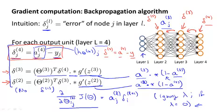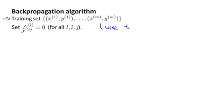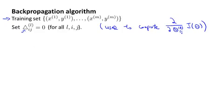So this is a lot of detail. Let's put it all together to talk about how to implement backpropagation to compute derivatives with respect to your parameters for the case of when we have a large training set, not just a training set of one example. Suppose we have a training set of m examples. The first thing we're going to do is set these capital delta L subscript ij — that triangle symbol is the capital Greek delta — equal to zero for all values of l, i, j. Eventually, this capital delta lij will be used to compute the partial derivative terms. These deltas are going to be used as accumulators that will slowly add things in order to compute these partial derivatives.